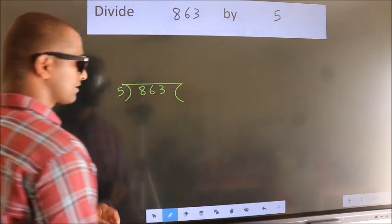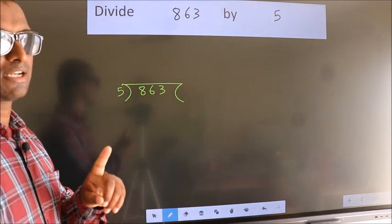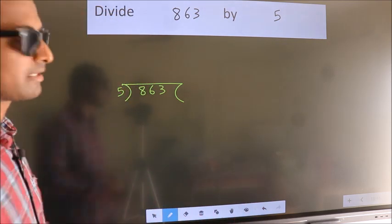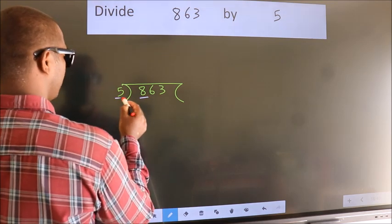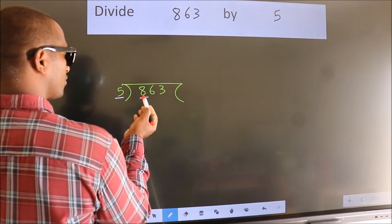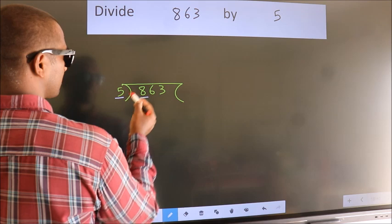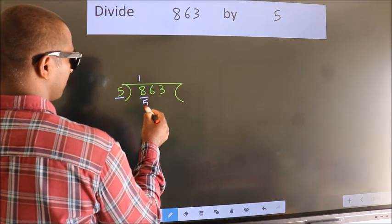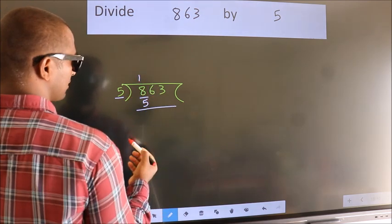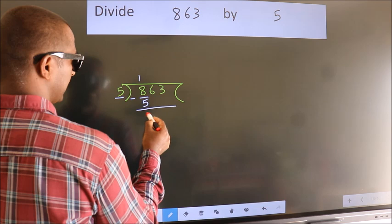This is your step 1. Next, here we have 8, here 5. A number close to 8 in the 5 table is 5 once, which is 5. Now we should subtract; we get 3.